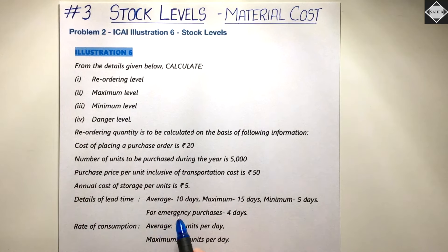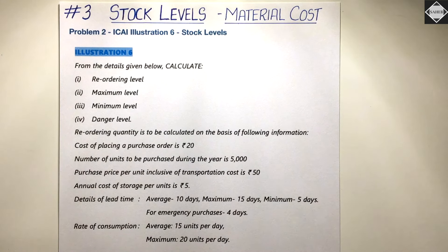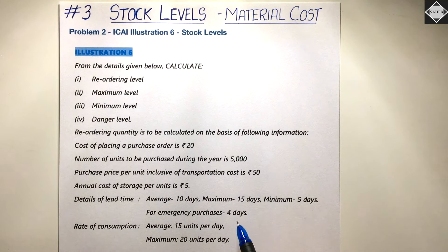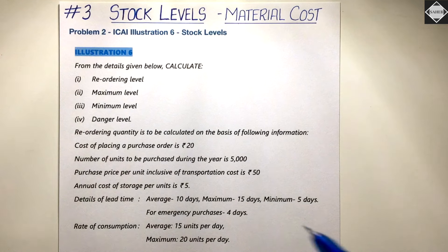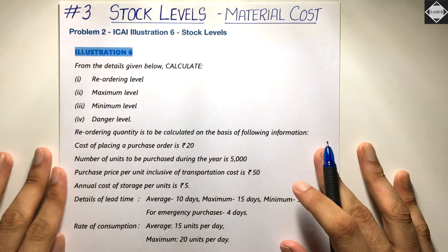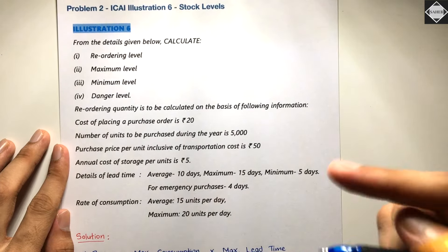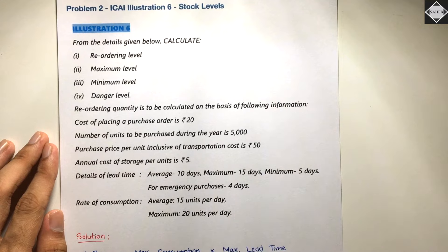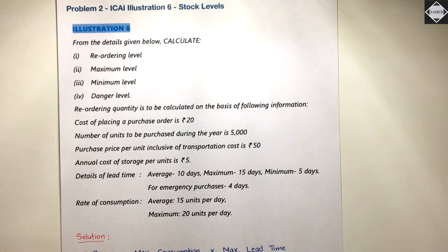Details of lead time: average 10 days, maximum 15 days, minimum 5 days — all lead times are given for use in formulas. Emergency lead time is also given as 4 days since we need to calculate danger level. Rate of consumption: average 15 units per day, maximum 20 units per day. Note that minimum consumption is not directly given, so we will have to calculate it, since the maximum stock level formula requires minimum consumption.